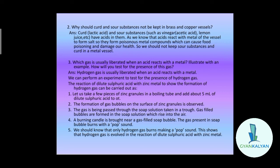Next question: why should curd and sour substances not be kept in brass and copper vessels? It is always advised not to keep food substances containing acids in any metal vessel, because the acid present in the food will react with the metal of the vessel, forming harmful metal compounds that cause food poisoning. So curd, lemon juice, orange juice, and similar sour substances should not be kept in metal vessels.